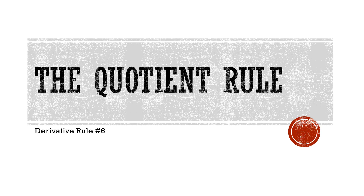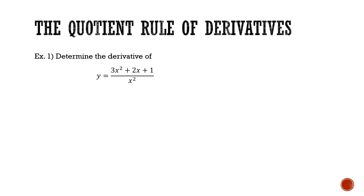Our next rule for derivatives is the quotient rule. We're going to jump straight into an example: we're going to determine the derivative of 3x squared plus 2x plus 1 divided by x squared. This is similar to what we did in our last video with the product rule, but here we have a function in the numerator f of x divided by a function in the denominator g of x. So instead of examining the product, we're examining the quotient of f of x divided by g of x.